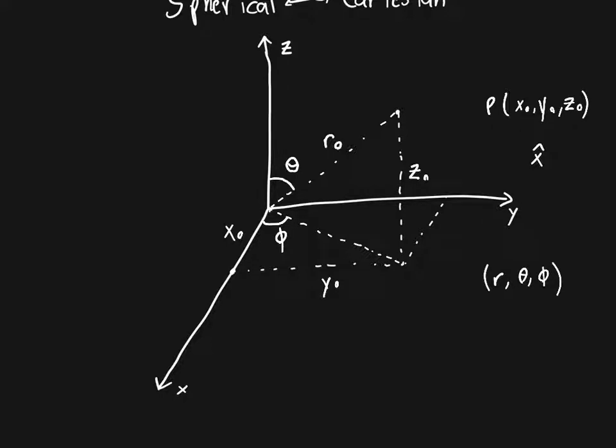The weird thing about spherical vectors and the thing that makes them both so powerful and so annoying is that they change based on your point. Let me show you what I mean.